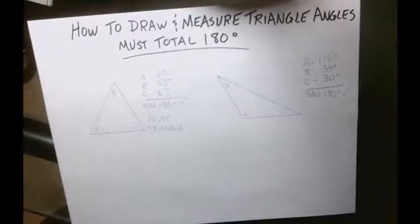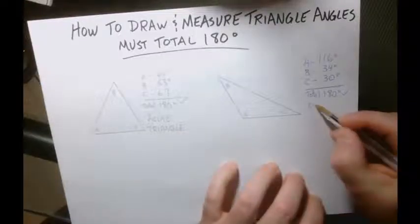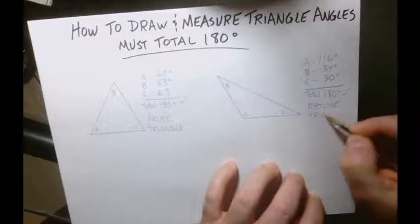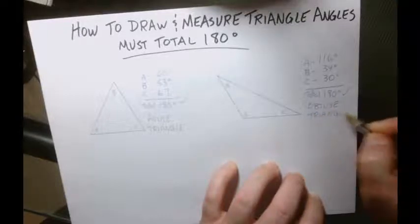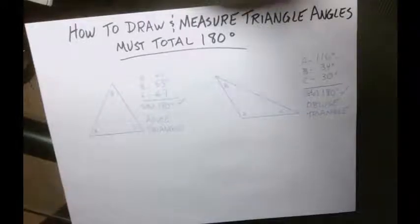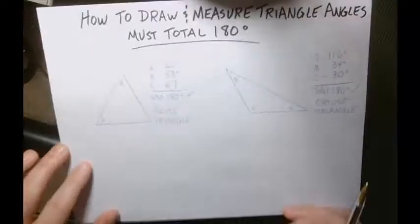Okay, now we have an acute triangle. We have an obtuse triangle. Well, what kind is left? If we were in class right now, I'd hear about four of you say right triangle, and I would say correct. So how do you make a right triangle?